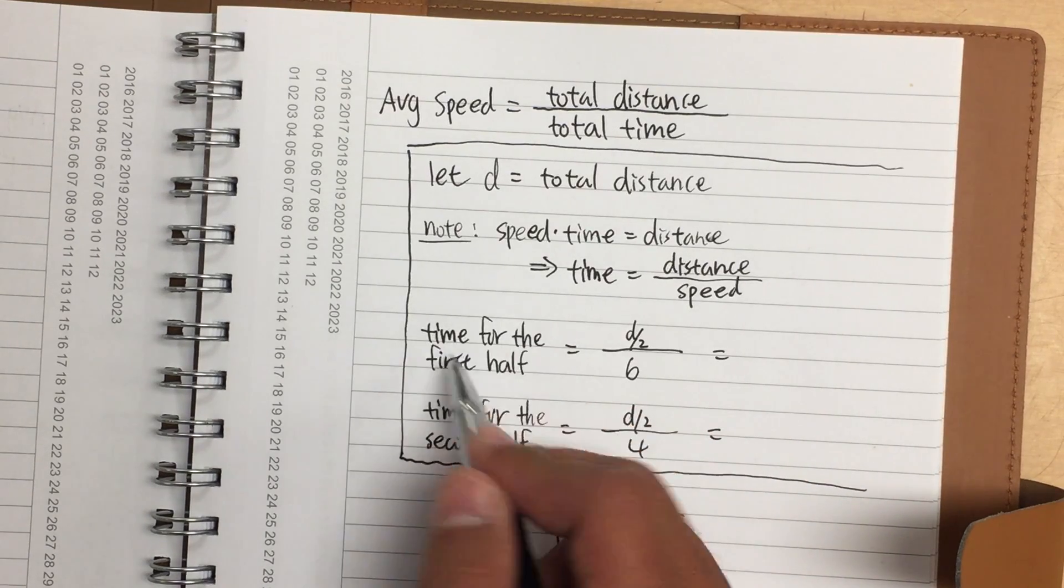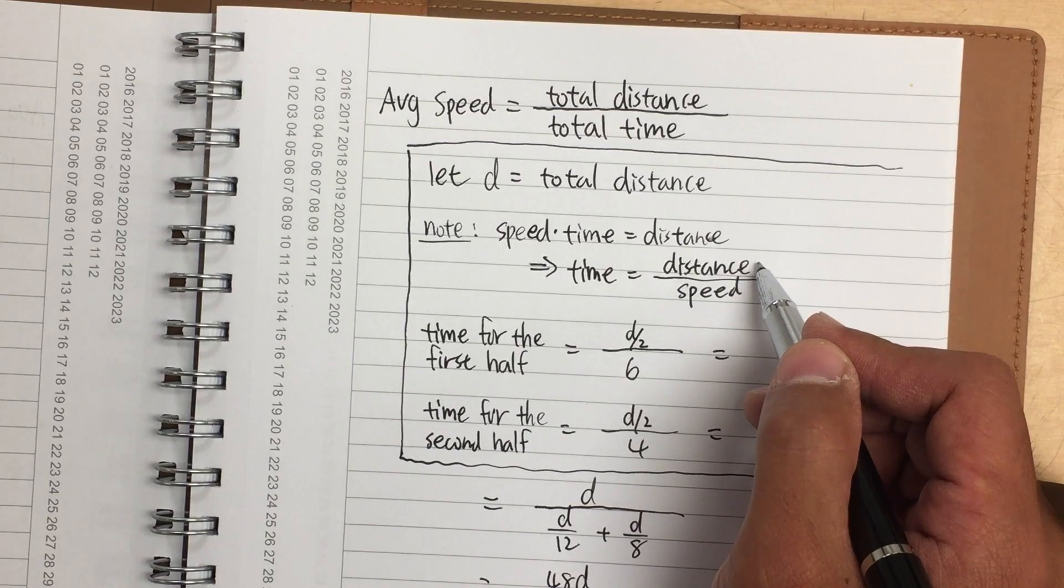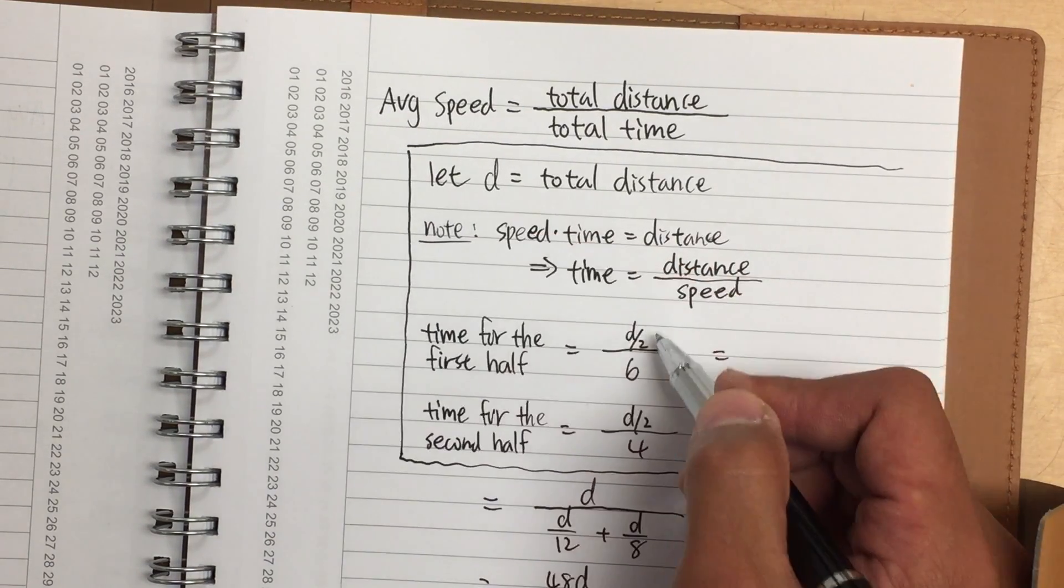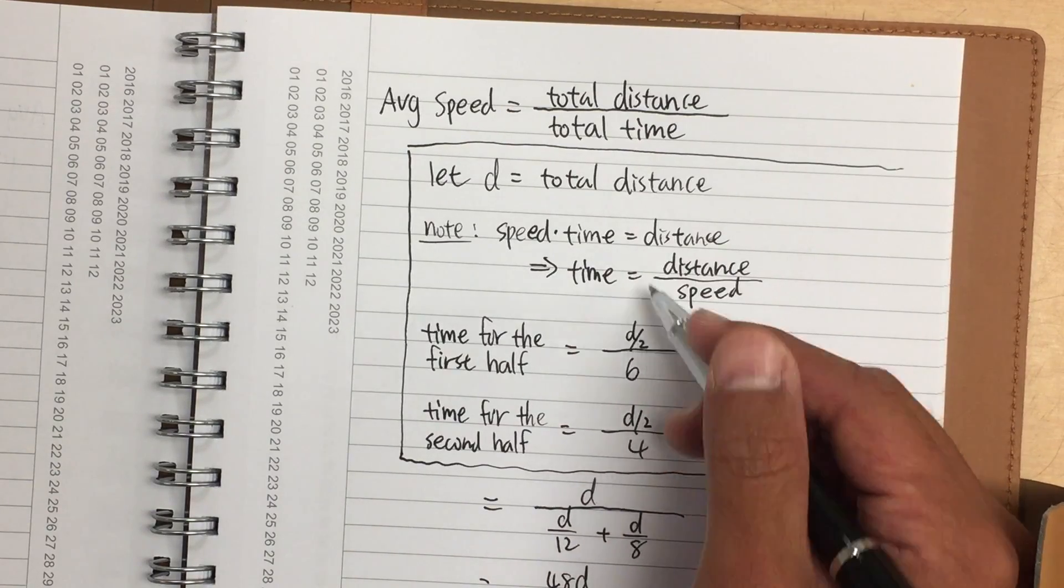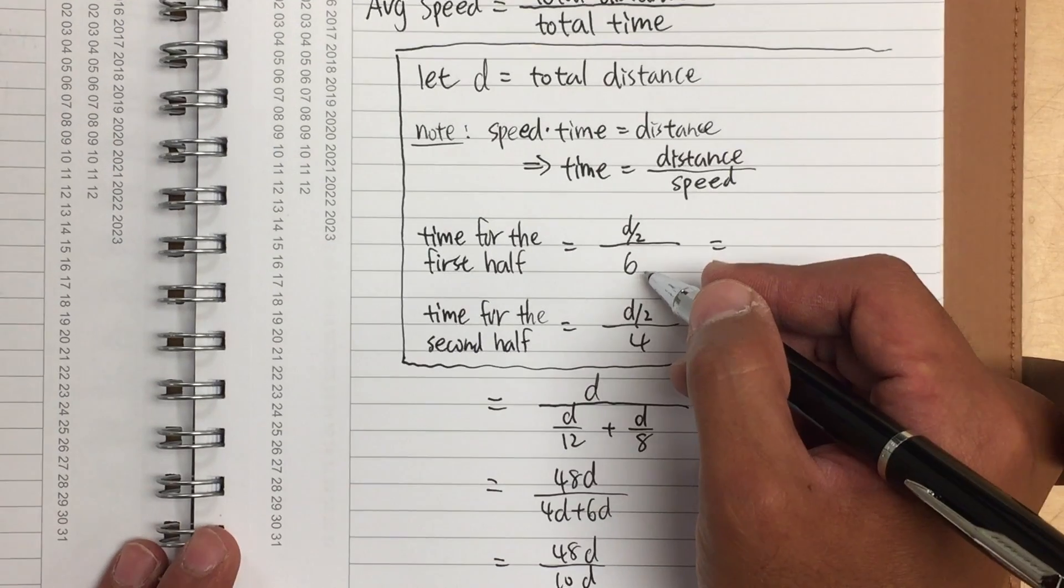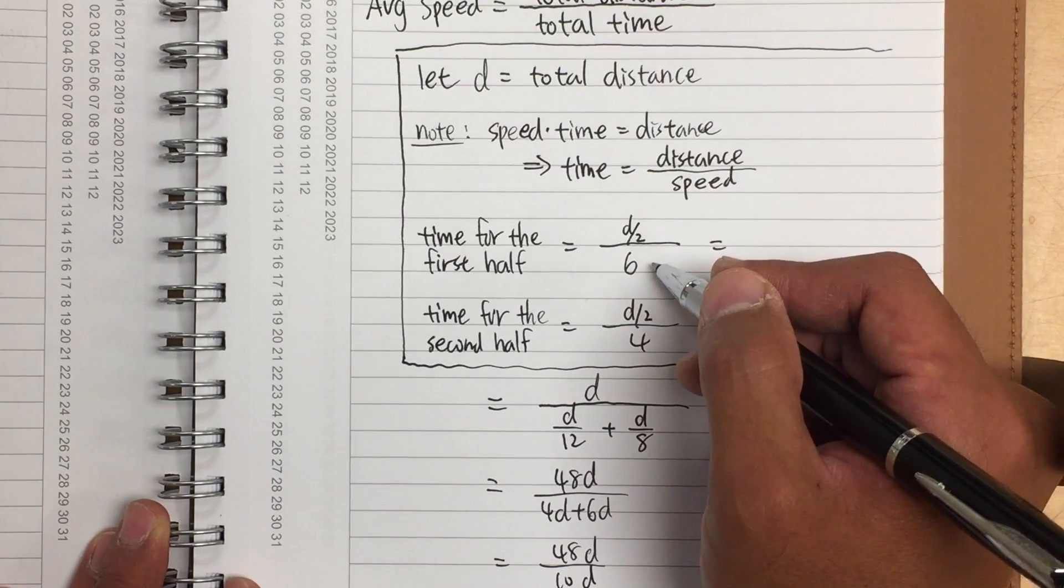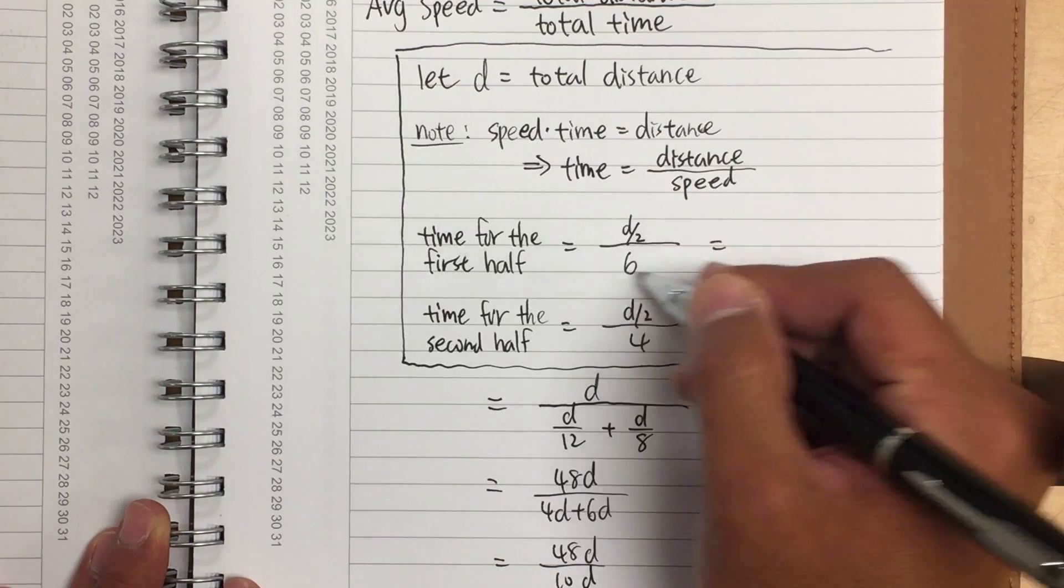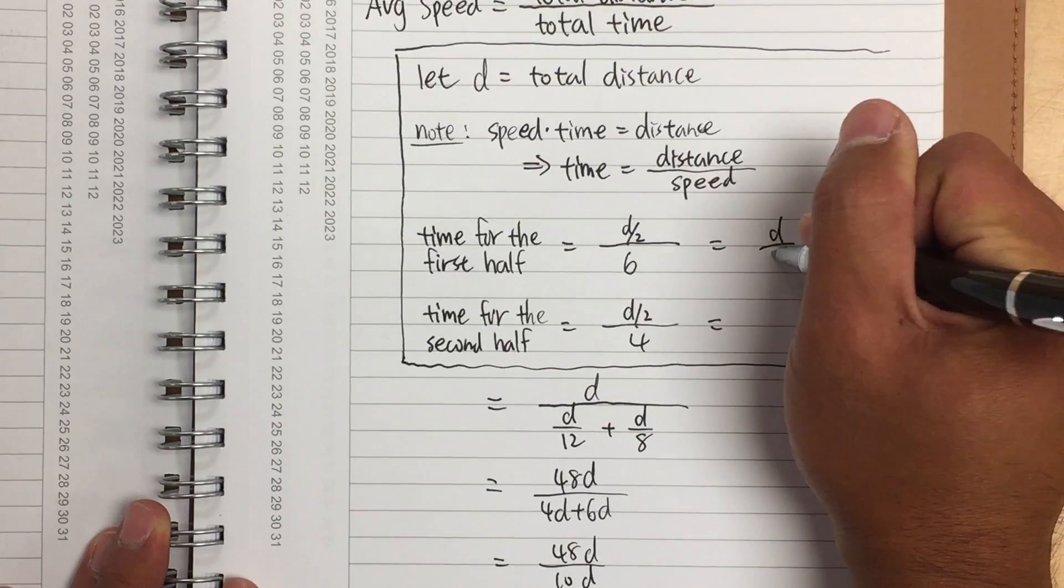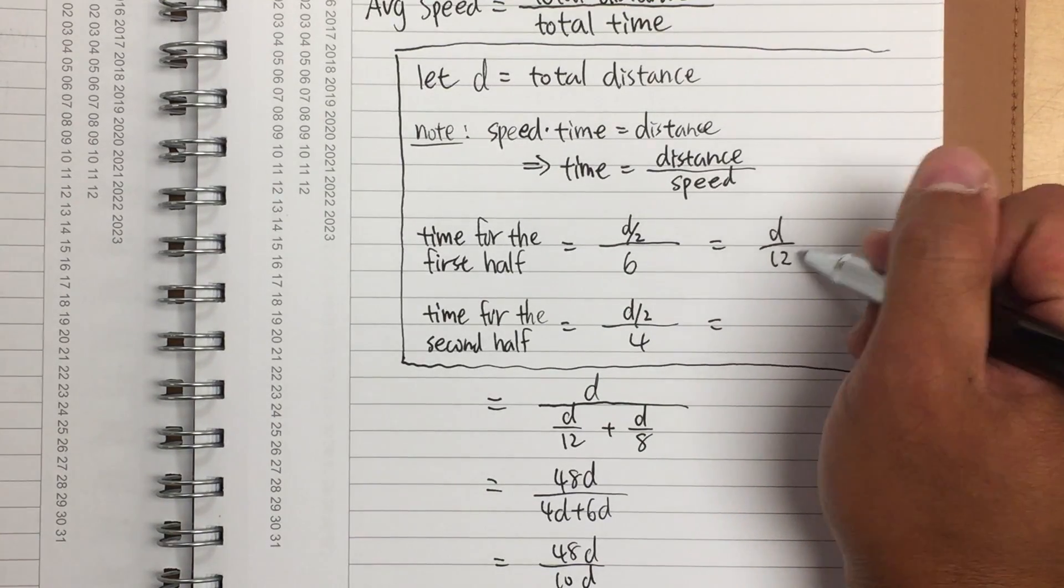And now, let's figure out the time for the first half. Well, for the first half, I need to have the distance on the top. For the first half, it will be just d over 2 for the distance, right? And then over 6, because I told you guys earlier, I ran with the average speed of 6 miles per hour for the first half. So this right here is going to give me the time for the first half. And d over 2 over 6 is going to give me a total of d over 12.